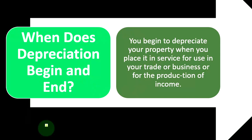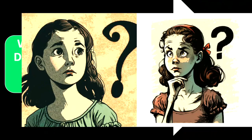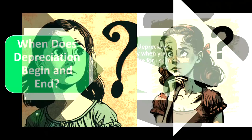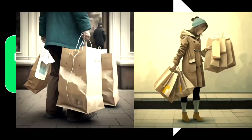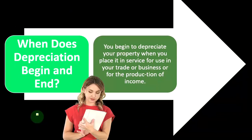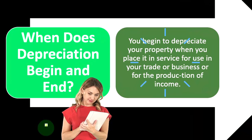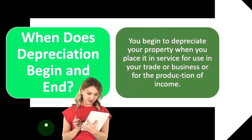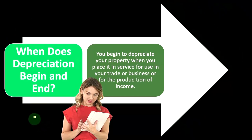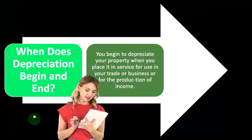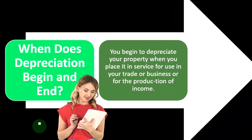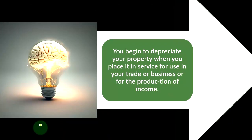Given that, when does depreciation begin and end? You might think it's straightforward — that it begins when you buy the equipment — but it can be confusing in terms of when you actually put it into operations. The conventions being used, such as a half-year convention or a mid-month convention for certain types of depreciable property, mean that when depreciation actually starts can be more complicated than you'd first think.